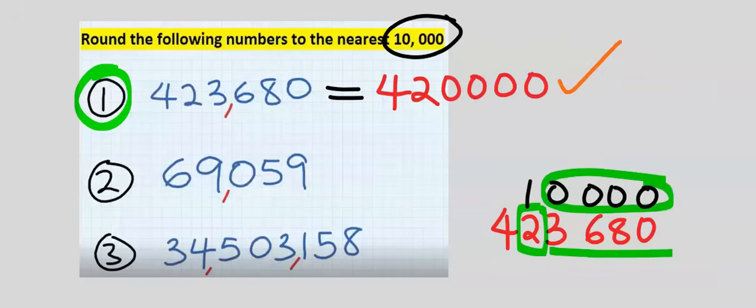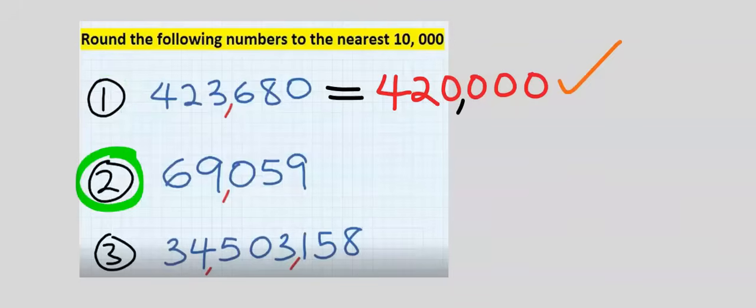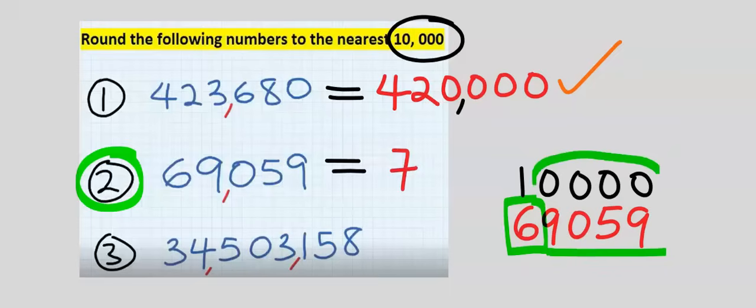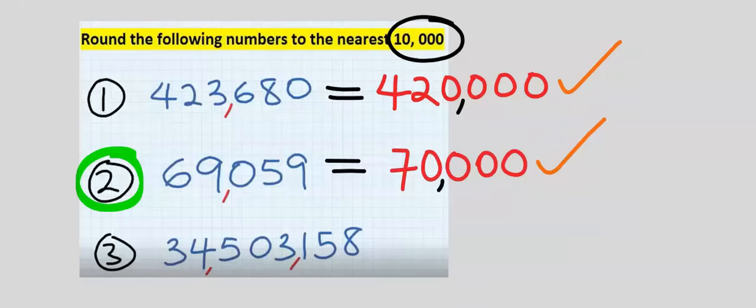Next, consider the second question. To the nearest ten thousand is 10,000. Hence six will be modified or it will stay the same. However, nine can modify six, which will become seven. Nine, zero, five, nine will all acquire zeros, and this is our answer.